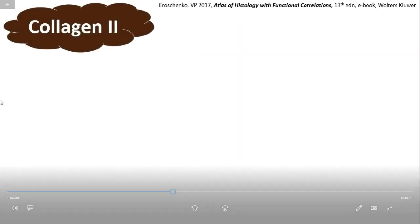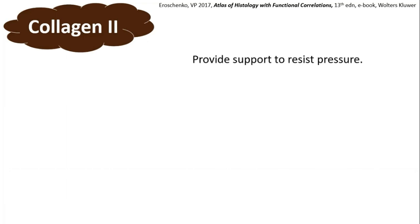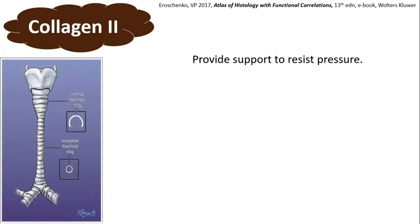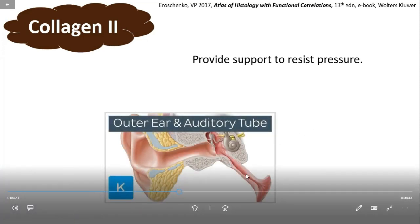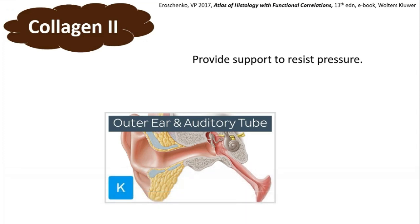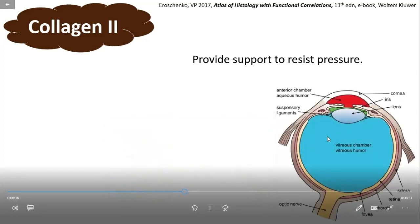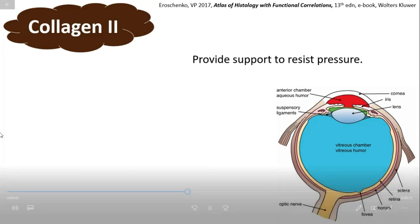Collagen 2 functions to provide support and resist pressure. It is present in the tracheal ring and the cartilaginous part of the Eustachian tube, where it deals with air pressure and mechanical pressure from surrounding structures. It is also present in the vitreous body of the eyeball, maintaining intraocular pressure and therefore the shape of the eyeball.